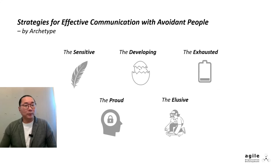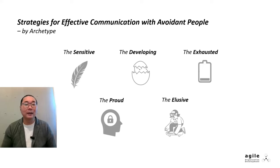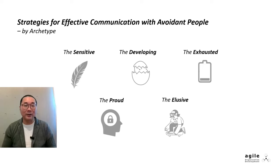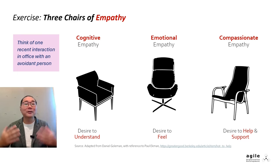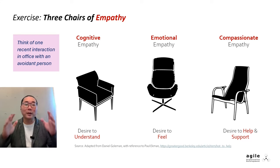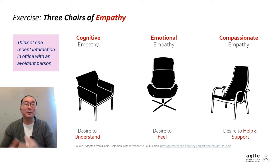So how can we approach communication with these avoidant people? Earlier, I mentioned using design thinking to explore this topic. For those who are familiar with design thinking, we use empathy as a discovery tool. So let's use the power of empathy to crack this problem. In fact, I'd like to suggest a turbocharged empathy exercise called the three chairs of empathy exercise. This is my go-to mental model whenever I'm dealing with someone facing a complex challenge and I want to figure out how to help.